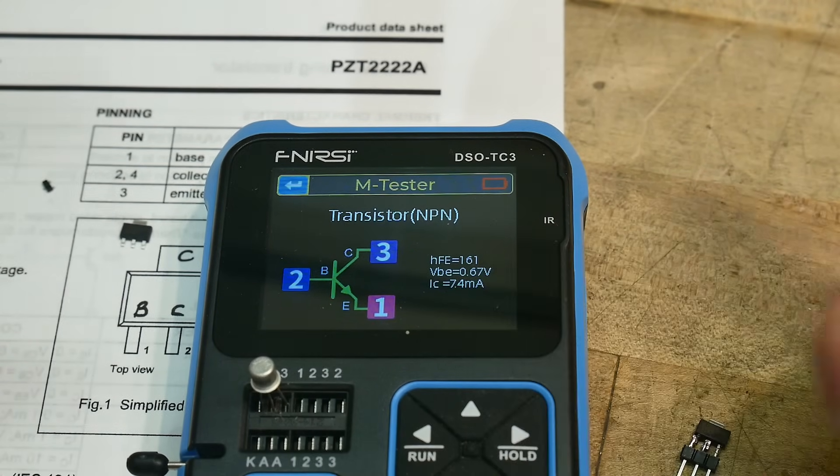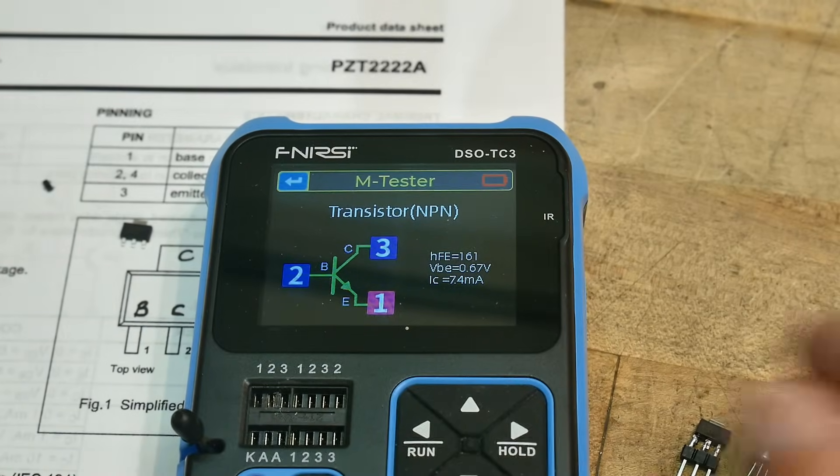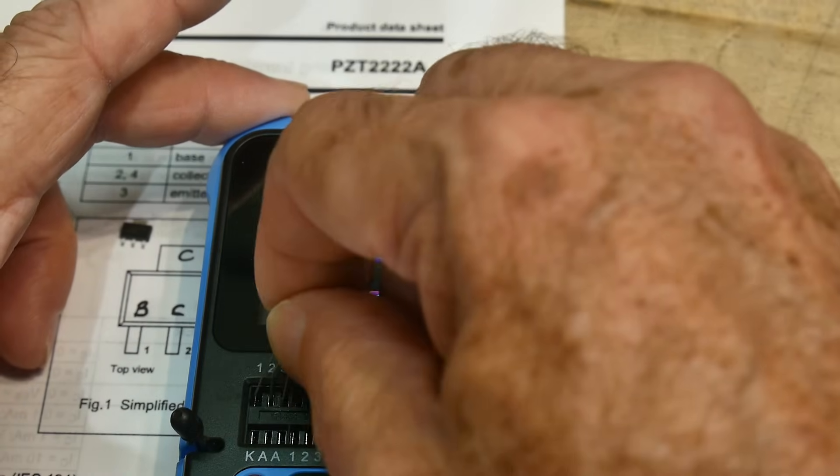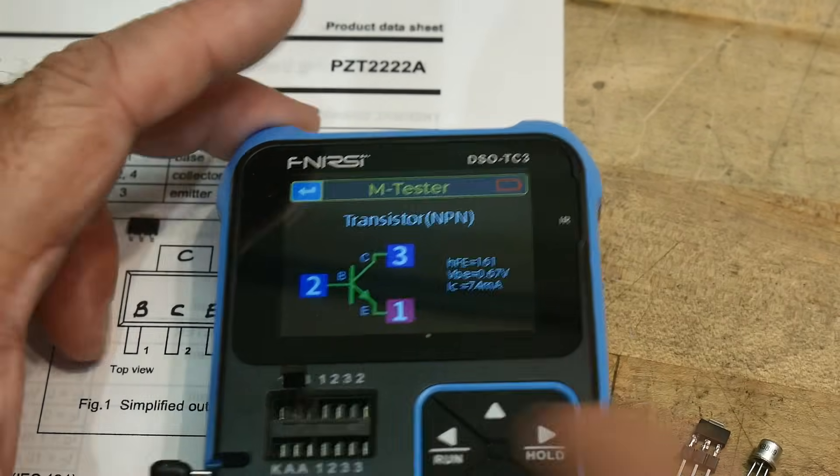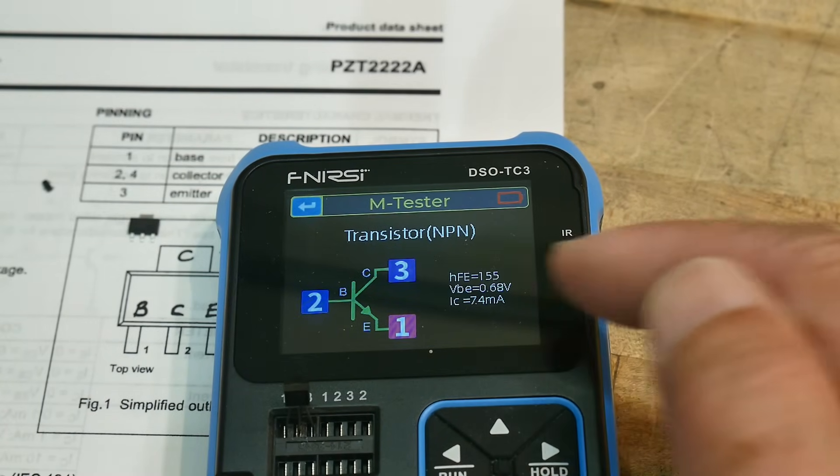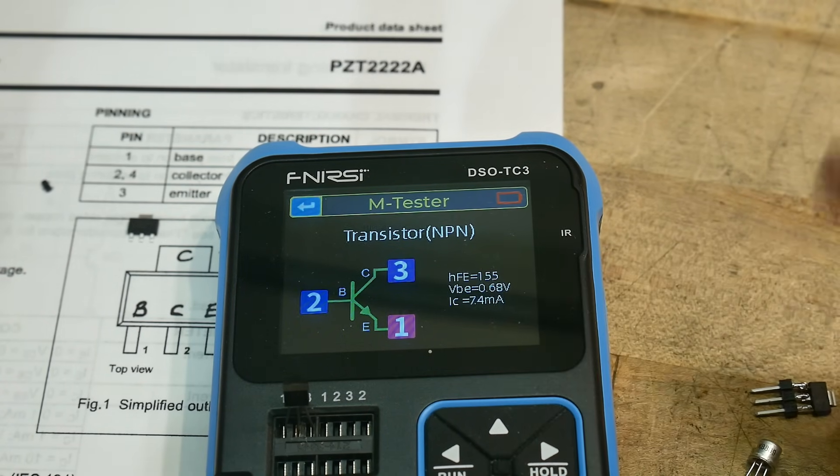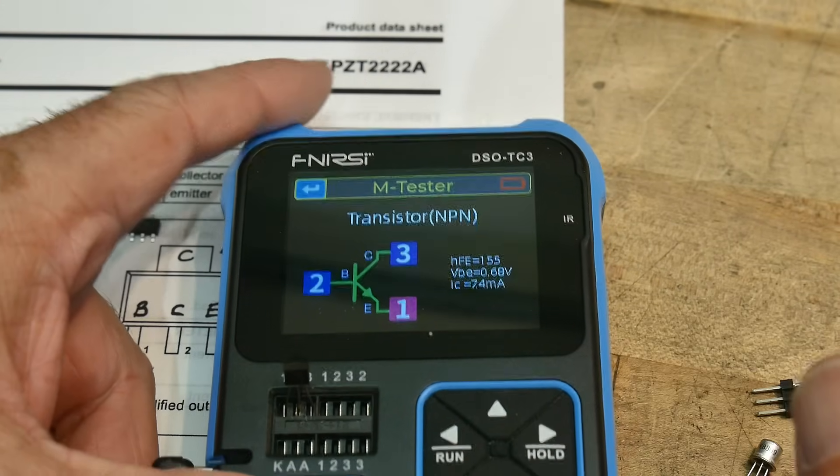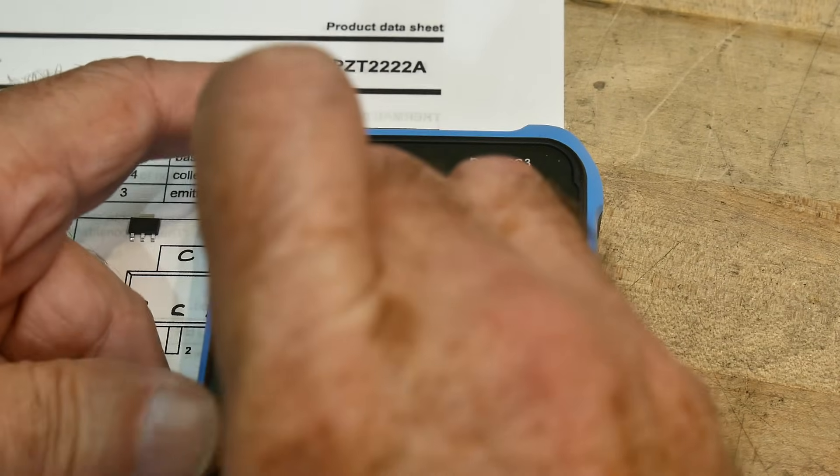VBE of 0.67 volts and a test frequency, a tested current of 7.4 as before. Let's put in the plastic version, the TO92 version. Alright, put him in. And did they get him in there right? Yeah, I think I did. HFE of 155, a little bit lower, VBE of 0.68 and a test current of 7.4 milliamps as before. So there you go. Yeah, the newer one has a little bit higher HFE, which I would have expected.